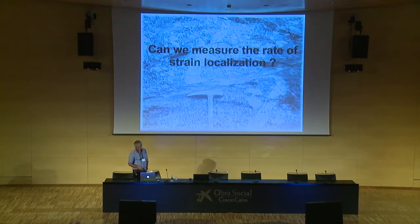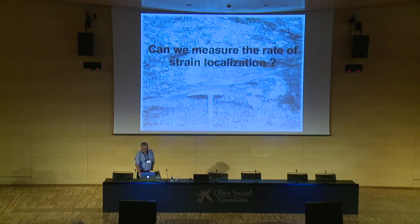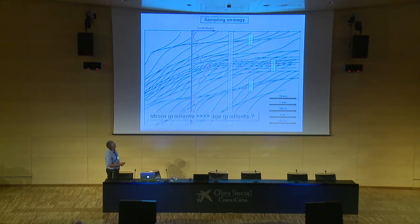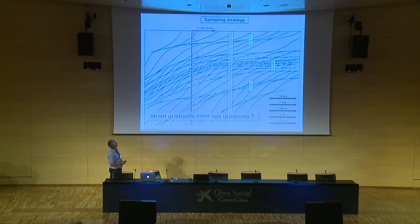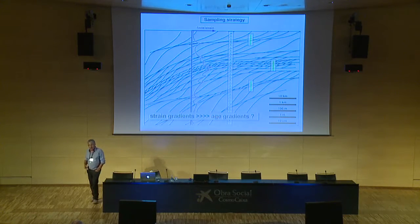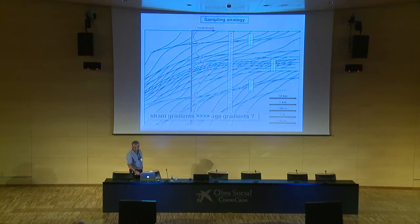One of the questions we are treating is: can we measure the rate of strain localization within those crustal-scale shear zones? The sampling strategy is this: if we have a shear zone with several branches and a major one in the middle, this represents the finite strain across the shear zone. We sample this at different scales with different density of sampling, and we hope that these strain gradients will lead to age gradients using the argon-argon method on micas. This is a bit of a challenge — in some areas we know it works, and in other examples we know it doesn't.